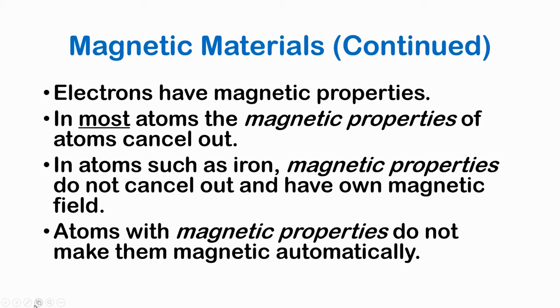Atoms with magnetic properties do not make them magnetic automatically. You've got to think about the orientation of the atoms, and that's what is referred to as magnetic domains, which we're going to talk about.